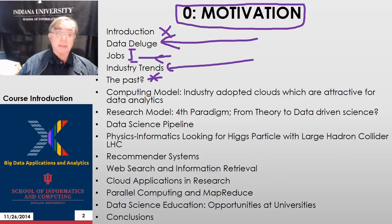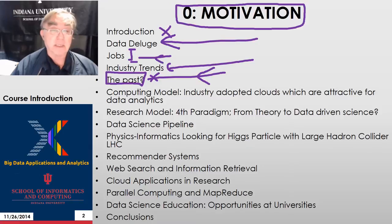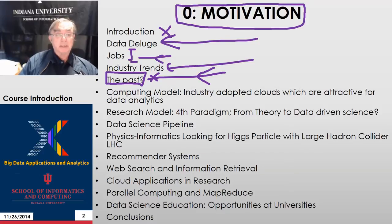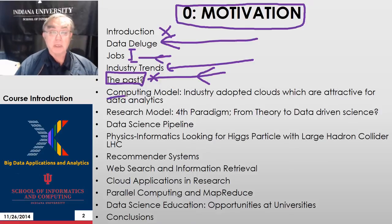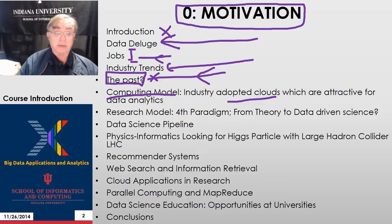In the next section, the next part of this motivation, which is a separate lesson, we discuss the past — namely what has happened to the malls and what will happen to the malls. There is a discussion section on the community group called No More Malls, where we discuss the implications of the internet and e-commerce and big data on malls. Then we look at the whole computing model, where the key point is that industry uses clouds to do data analytics, and we point out why it's attractive for data analytics.